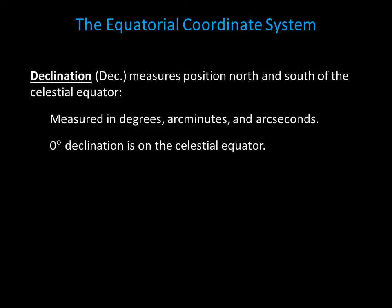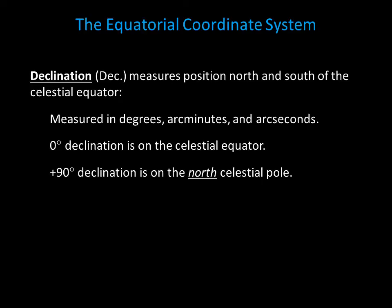Declination measures position north and south of the celestial equator. On the celestial equator, the declination is 0 degrees. Moving north of the celestial equator increases your declination — at the North Celestial Pole, the declination is 90 degrees. Moving south of the celestial equator gives you a negative declination, and at the South Celestial Pole the declination is minus 90 degrees.